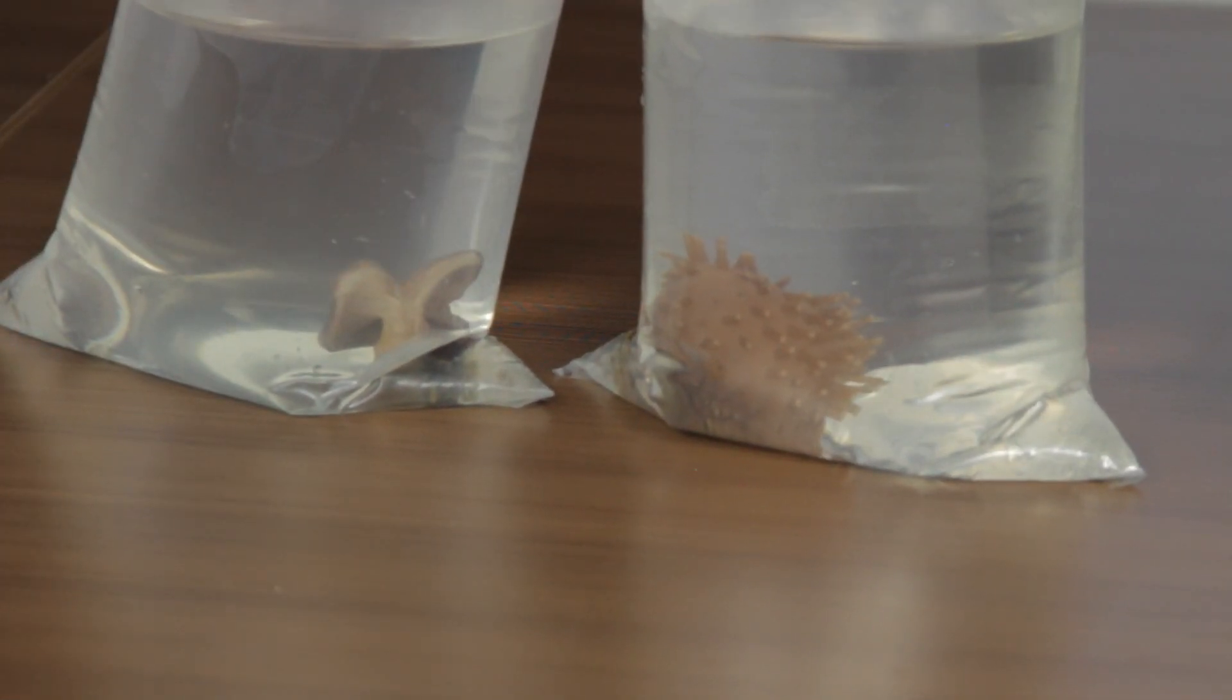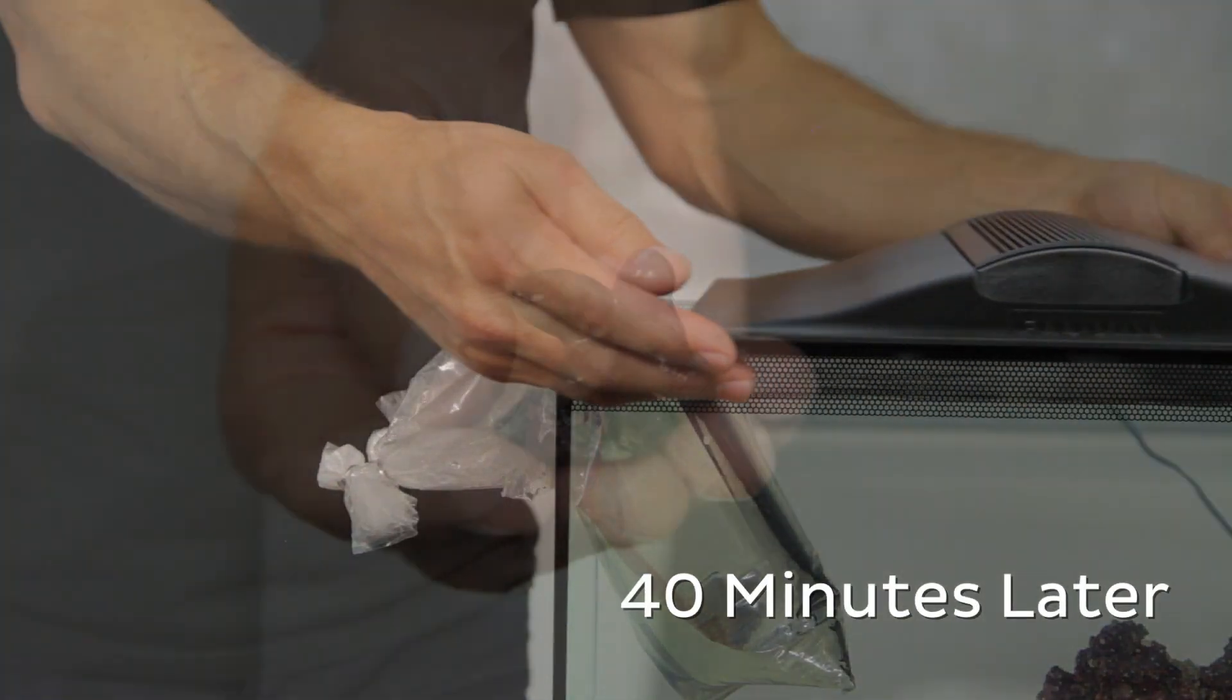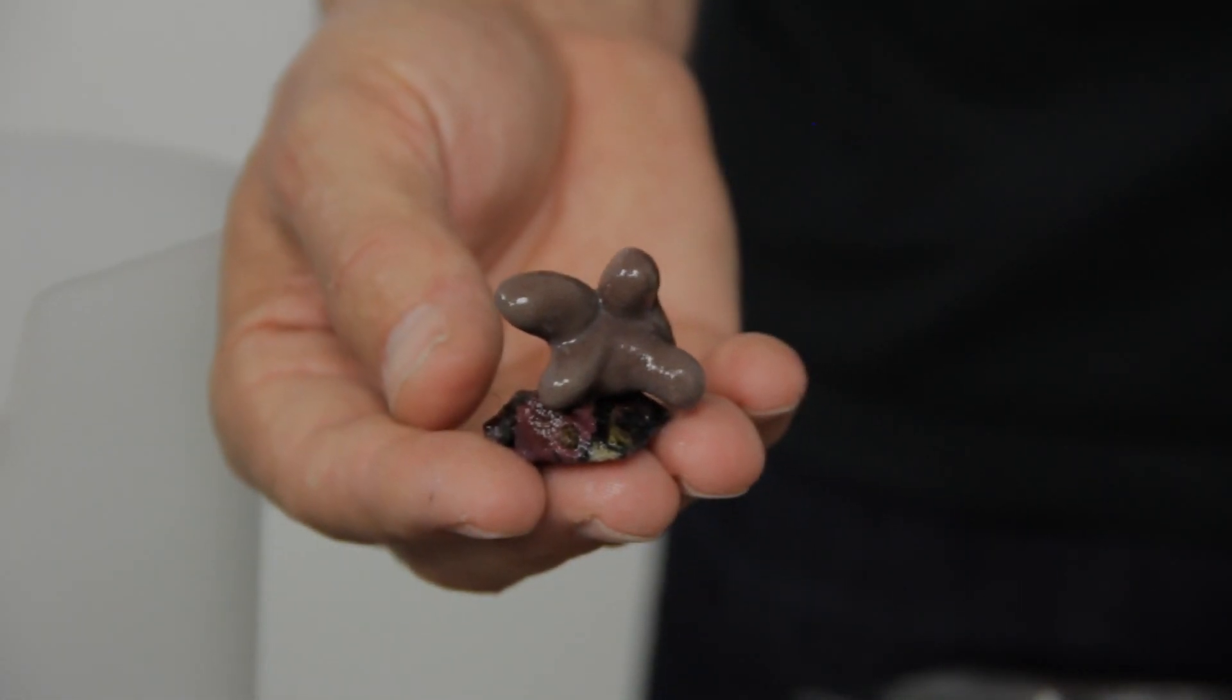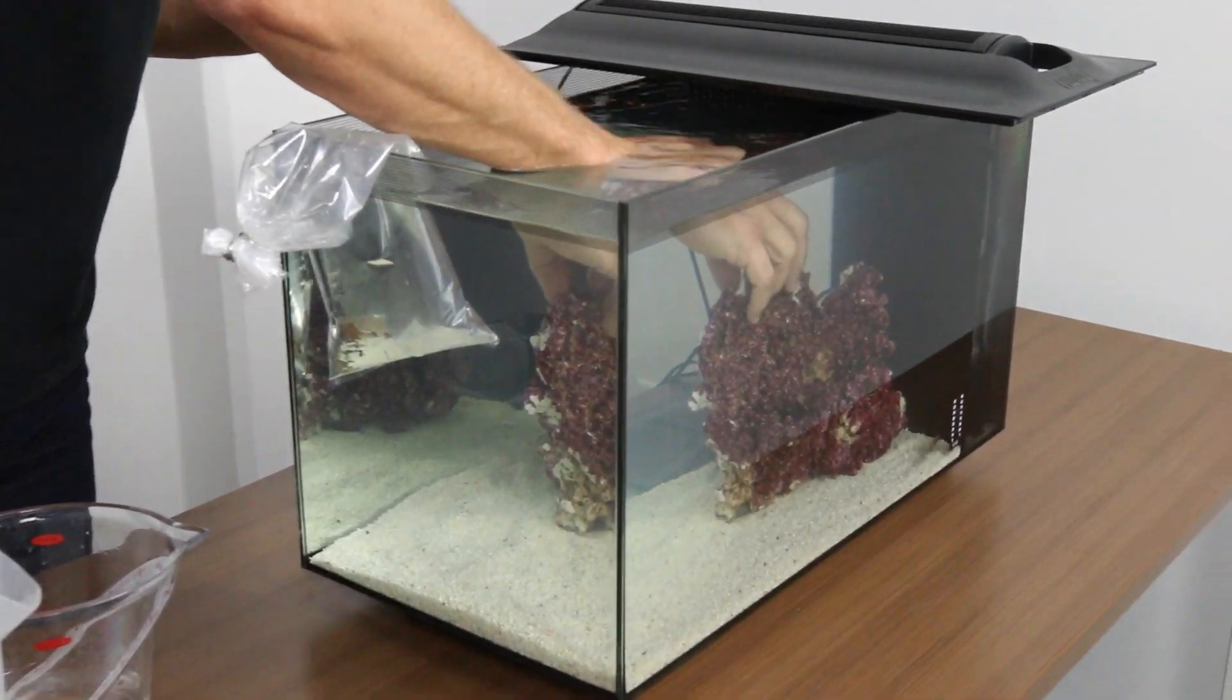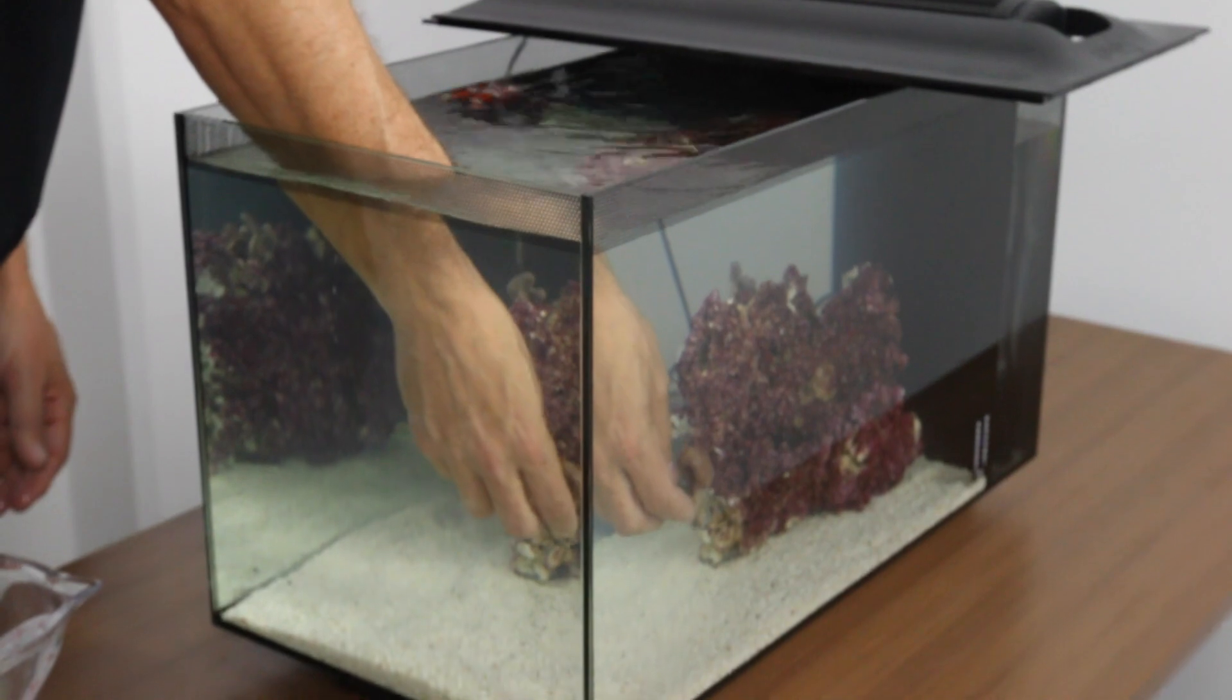You'll want to repeat this same process for acclimating the coral. After 40 minutes, place the coral onto the live rock or sand where they can be exposed directly to the LED light, being sure to pour out the water from the bags into the separate container first.